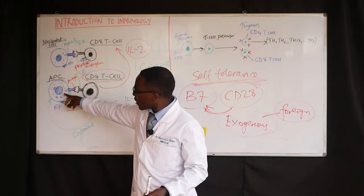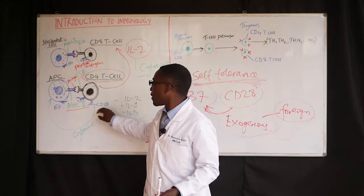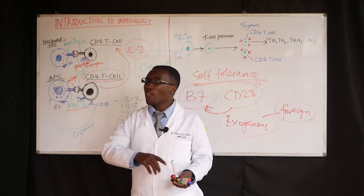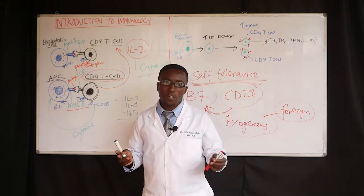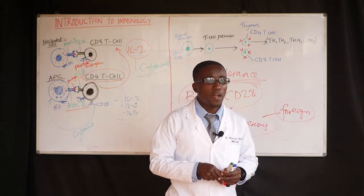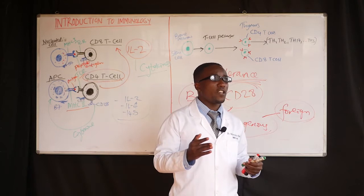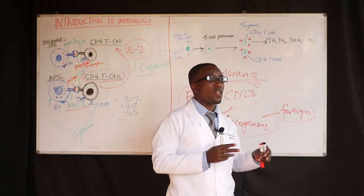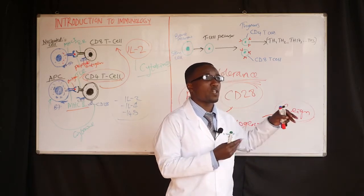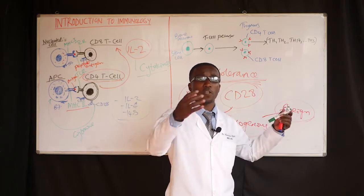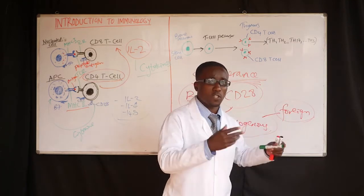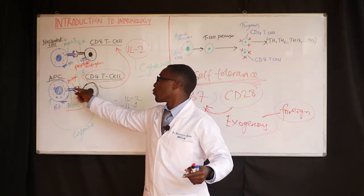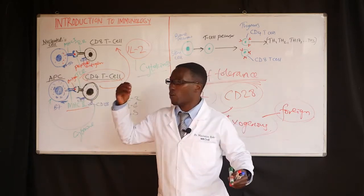If this antigen-presenting cell has been activated by our CD4 cell, assume this is our B-lymphocyte — this B-lymphocyte is going to be activated. After activation, it will further differentiate and produce memory B-cells, which will be responsible for keeping memory for future use in case of subsequent attacks by this antigen being represented as a foreign particle or peptide antigen.